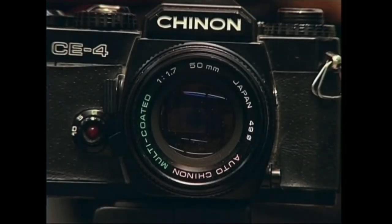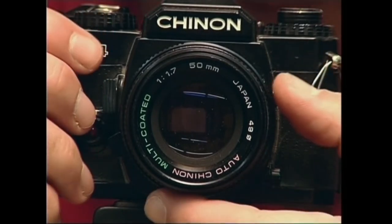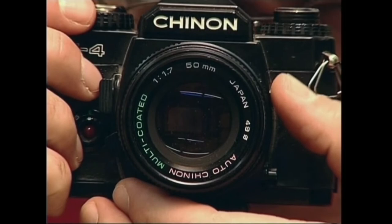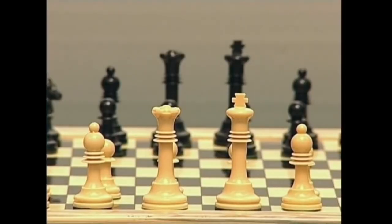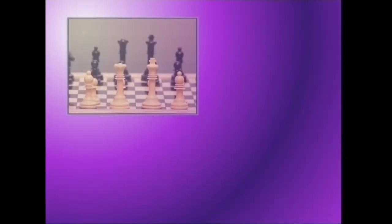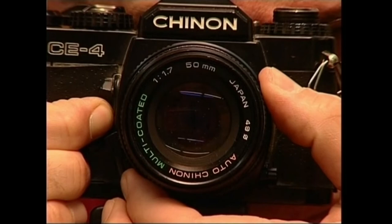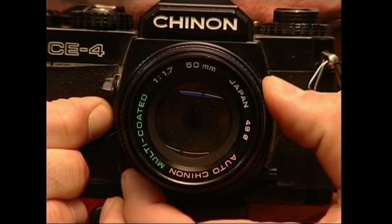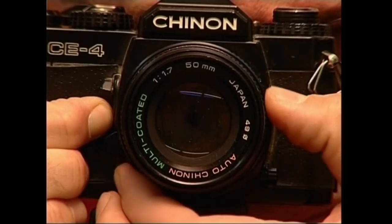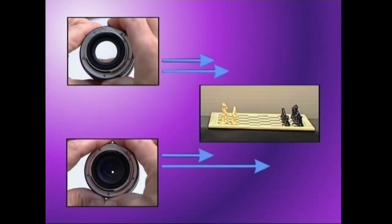Ikus eremuaren sakontasuna, argazkian fokaturik agertzen den ezzenaren zatiari esaten zaio. Argazkia egin nahi diogun ezzenan, elementu batzuk aurre aldean badaude eta beste batzuk atze aldean, argazkia ezberdina izan daiteke oso ikus eremuaren sakontasunaren arabera. Ikus eremuaren sakontasuna, diafragmaren irekieraren eta subjektuarekiko hartzen dugun distantziaren mende dago. Beraz, diafragmaren irekiera txikienari, ikus eremuaren sakontasun handiena dagokio.